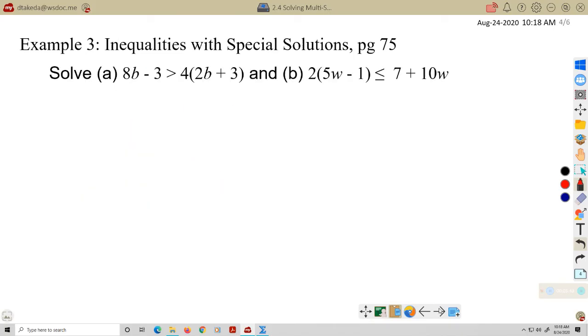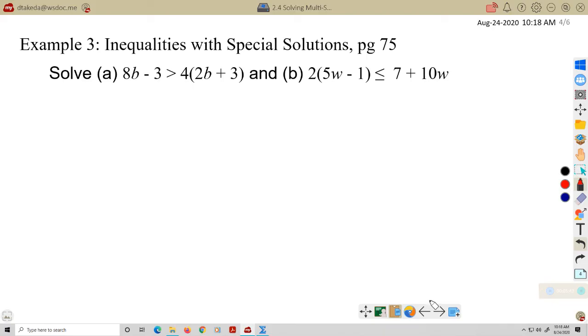Let's take a look at example 3: inequalities with special solutions. This is like the equations. If you have a variable on both sides, sometimes it's not going to work out. So let's take a look at these two examples here. First, I've got 8b. Let me rewrite this down lower so we can have some room to work. 8 times b minus 3 is greater than 4 times the quantity 2b plus 3.